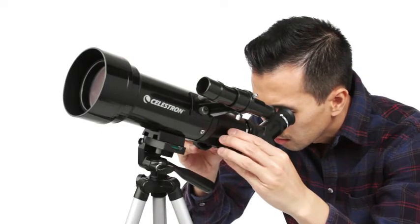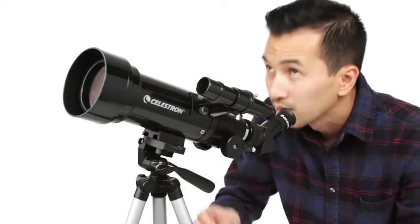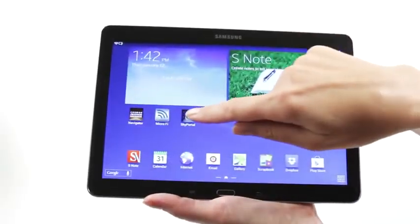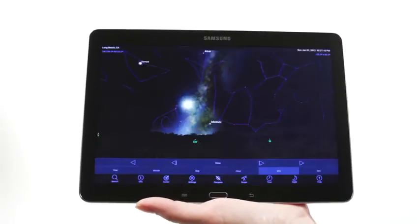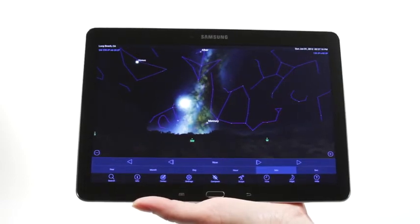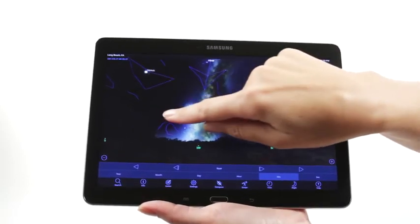Simply turn the knobs to bring your subjects into sharp focus. When you're out under the stars, use Celestron's free SkyPortal mobile app for iOS and Android to locate objects in the night sky.